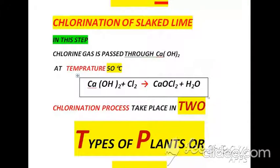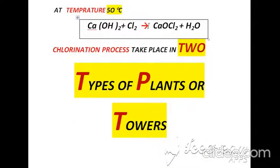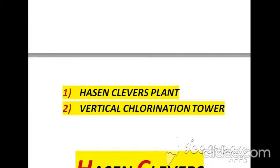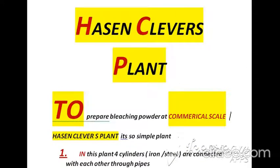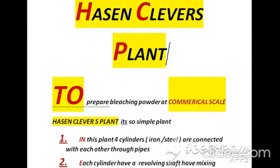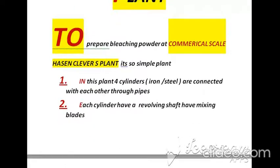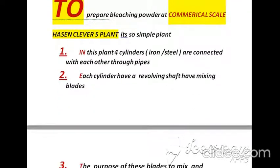That process takes place in two types of plants or towers. The first one is the Hasen Clover plant and the second one is the vertical chlorination tower. We will now discuss how the Hasen Clover plant works; through this plant we prepare bleaching powder at commercial scale.